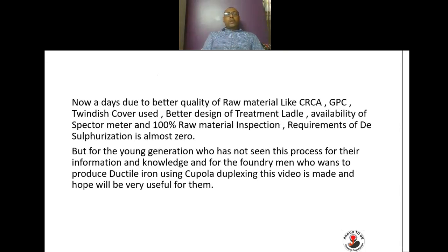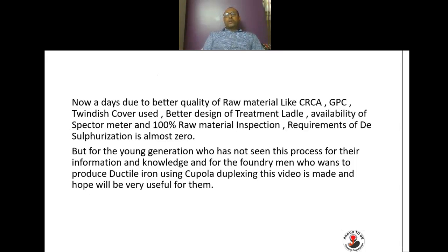Nowadays, due to better quality raw materials like CRCA, and the use of GPC (graphite petroleum coke) instead of carburizer, better-designed treatment ladles, availability of spectrometers, and 100 percent raw material inspection, the requirement for desulphurization is almost zero. Nobody is now using the desulphurization method for producing ductile iron. This video is mainly made for the young generation who have not seen this desulphurization process.